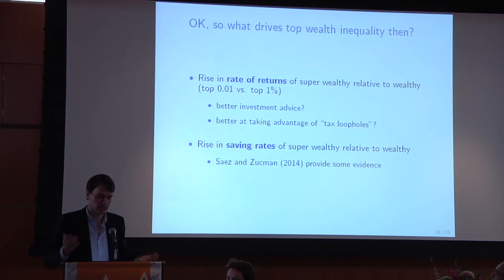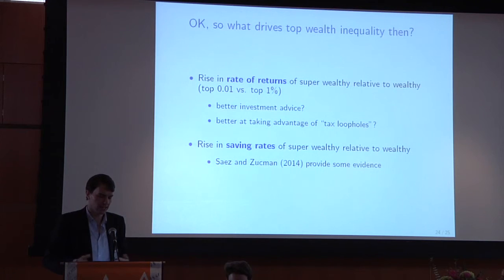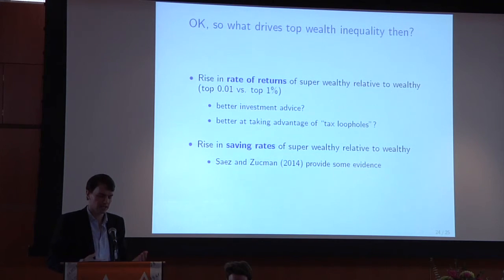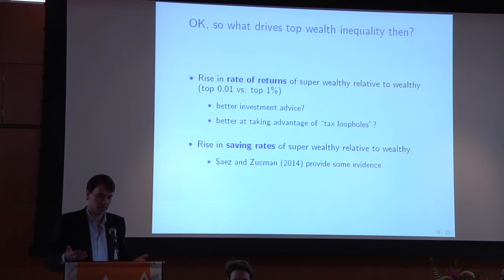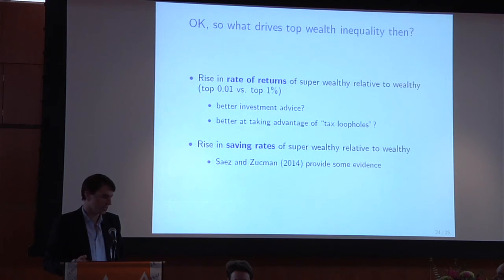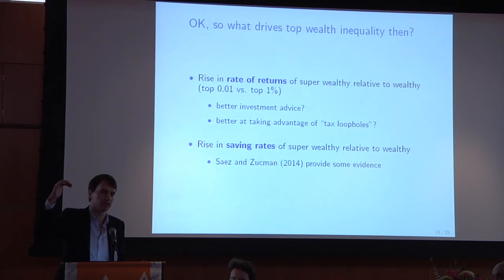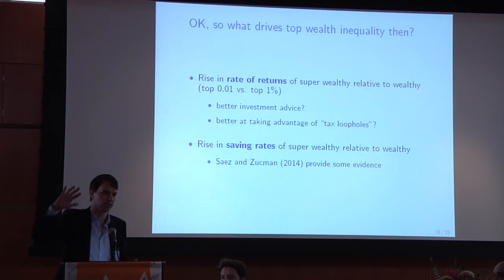What alternative economic theories can give you a fast rise in top wealth inequality? What you really need is not the r minus g story or a simple capital tax story, but something where the rate of return of the super wealthy relative to the just wealthy increases substantially. You don't get that from a simple tax story. You could get it from more complicated stories: maybe richer people get better investment advice that's become more extreme over time, or they're better at exploiting tax loopholes. Another possibility — and Gabriel showed some evidence for this — is that the savings rates of the 0.01% relative to the top 1% have increased over time.